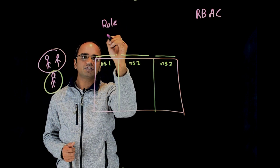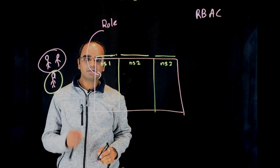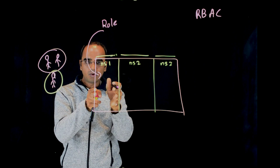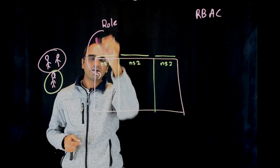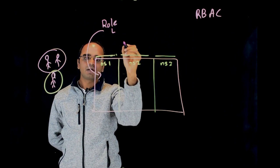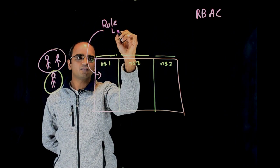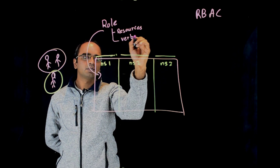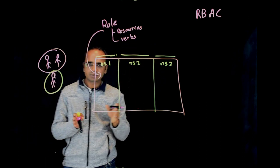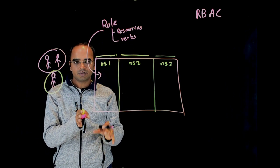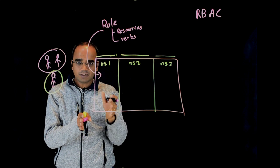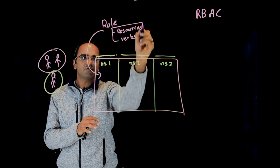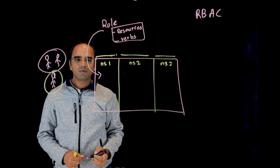You create a role which is specific to a namespace. Inside a role you do not define users — you just provide the access. What you define inside a role is what kind of access in the form of which resources, and what kind of action in the form of verbs. Verbs include things like list, watch, create, delete, and so on. Actions are defined as verbs, and that's what you define inside your roles.